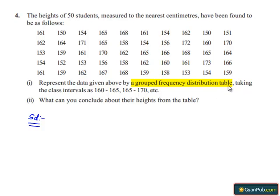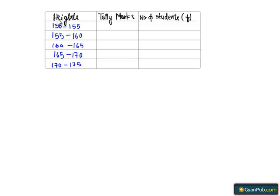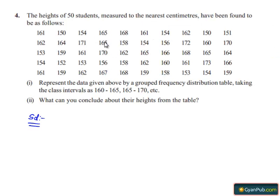They have asked us to represent the given data by a grouped frequency distribution table. So let's take the table. Here we have taken heights according to the given intervals, tally marks, and number of students as frequency. In the given problem, the least number is 150 and the highest number is 175.